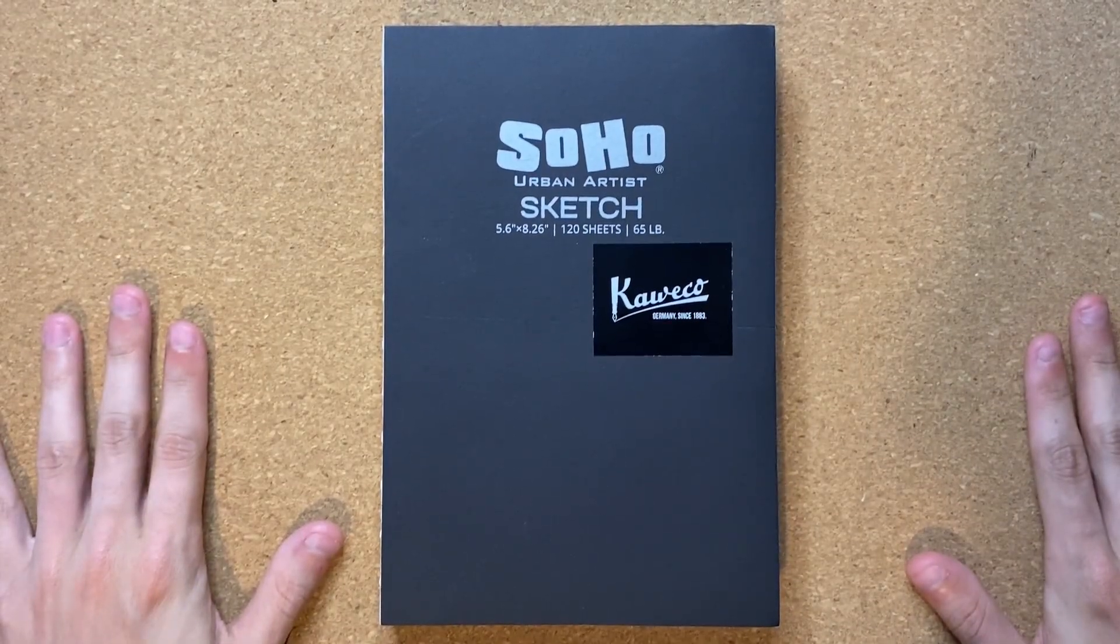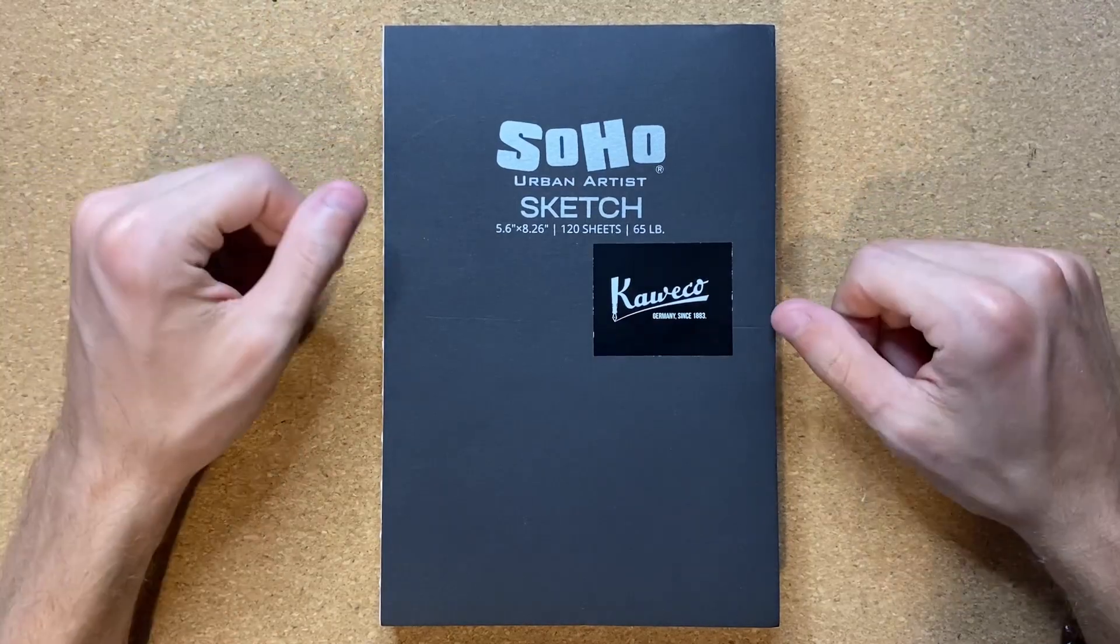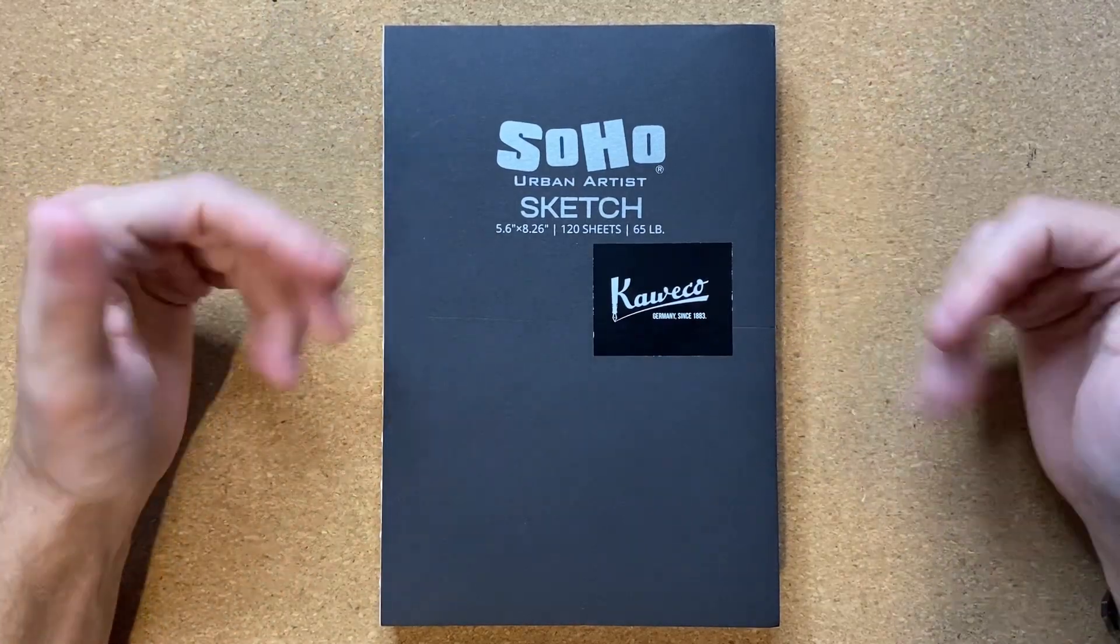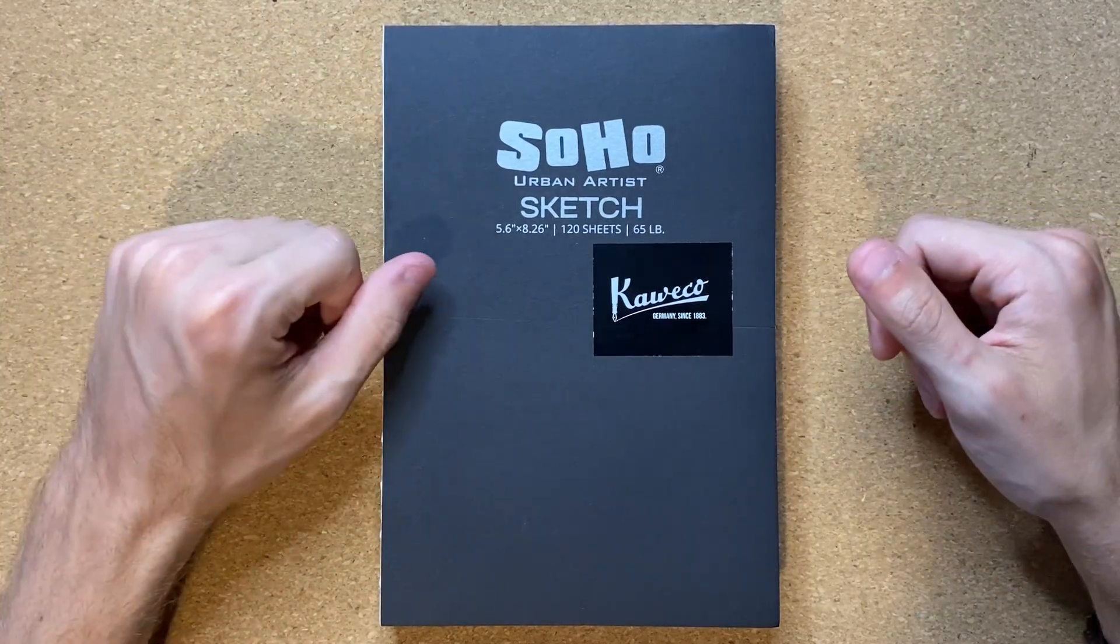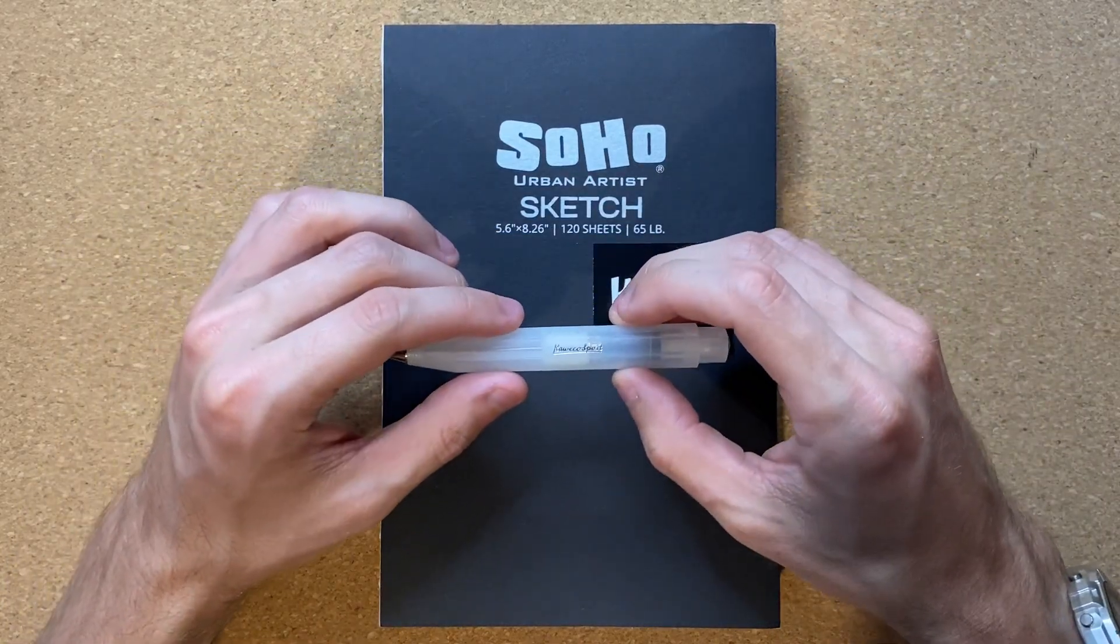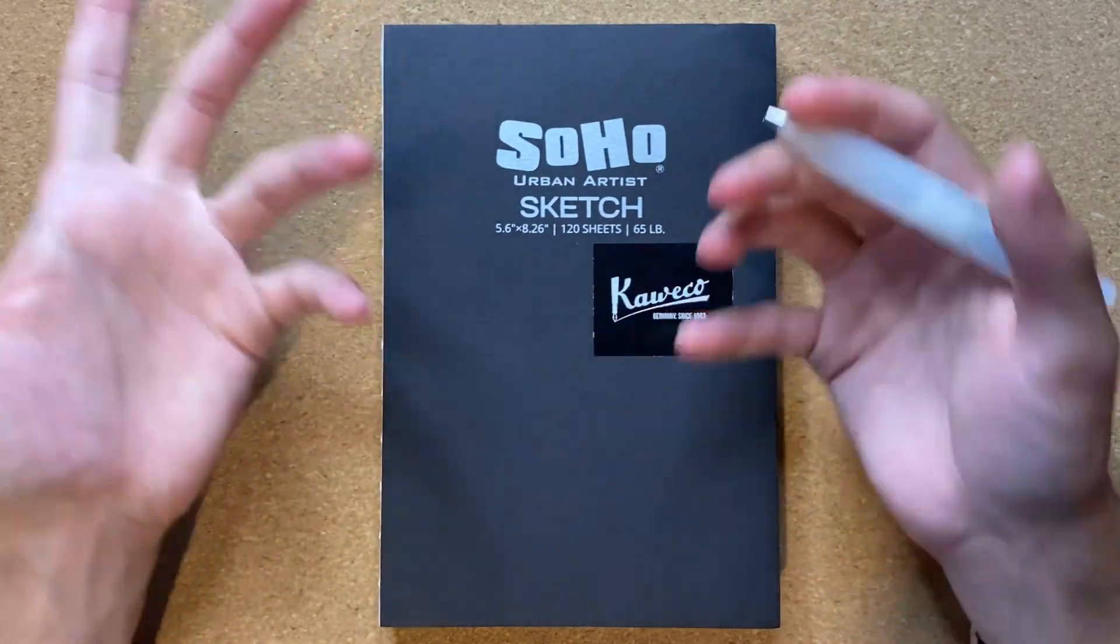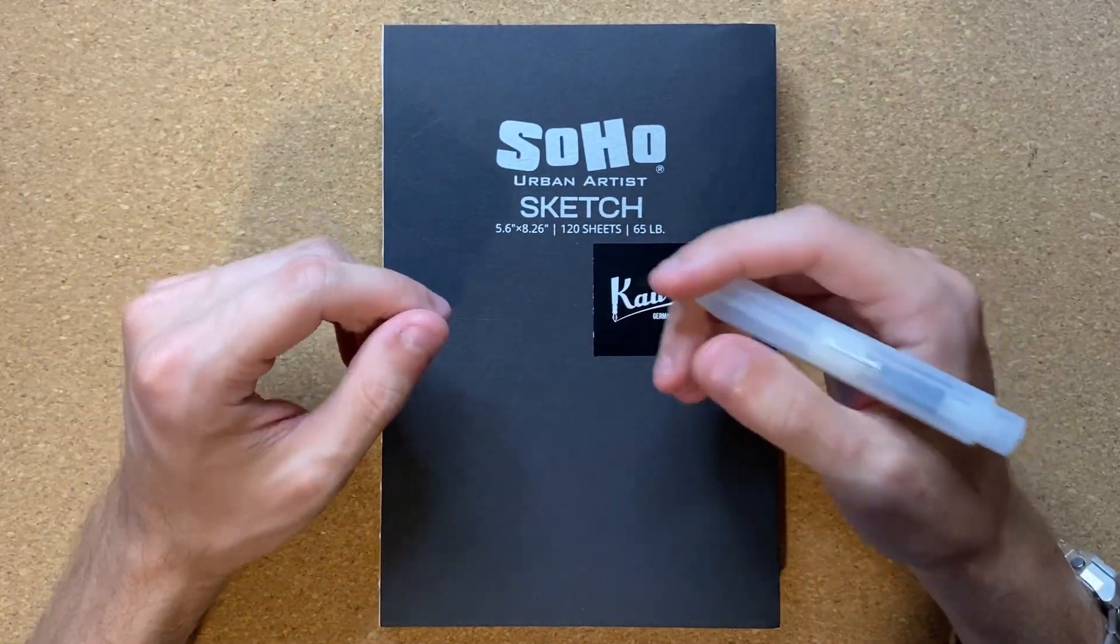Alrighty, so today I'm going to be drawing a fish. Specifically, I'm going to be drawing a small fish. That's the plan at least. Today I'm going to be drawing in my Soho Urban Artist Sketchbook, and I'm going to be drawing with my Kawako Frosted Sport Ballpoint Pen, which I have been enjoying using quite a bit over the last couple days.